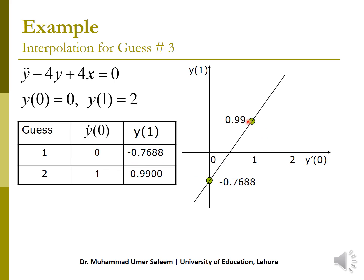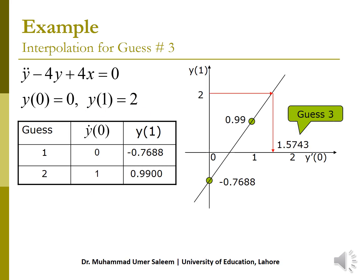My target is y(1) = 2. I have two points: when the guess is 0, y(1) = −0.7688; when the guess is 1, y(1) = 0.99. I will use interpolation — I'll draw a straight line through these two points. My question is: what should the guess be to get y(1) = 2? Using linear interpolation with these two points, putting the target value as 2, I get the third guess as y'(0) = 1.5743.